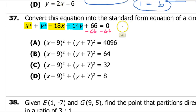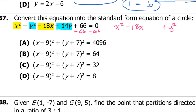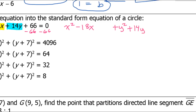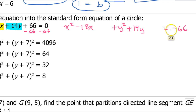Rewriting with x-terms together: x squared minus 18x — leaving a little space — then plus y squared plus 14y, leaving a bit of space, then negative 66 on the right. Now we're doing something called completing the square.